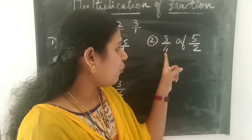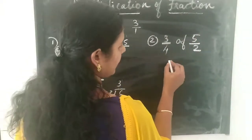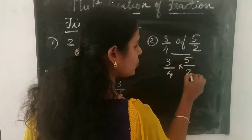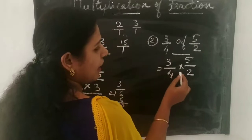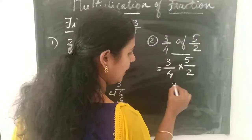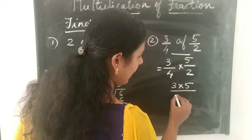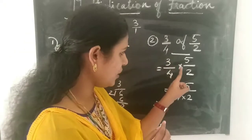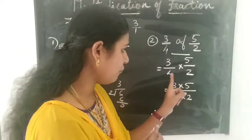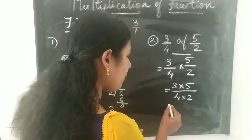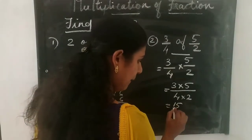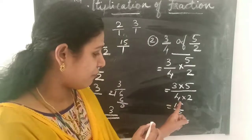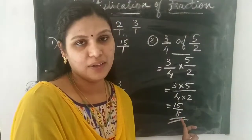The next question is 3 by 4 of 5 by 2. That is 3 by 4 into 5 by 2. We write the numerators multiplied together divided by the denominators multiplied together. That is 3 into 5 divided by 4 into 2. Now 3 into 5 is 15, and 4 into 2 is 8. So we get the answer as 15 by 8.